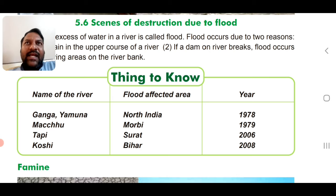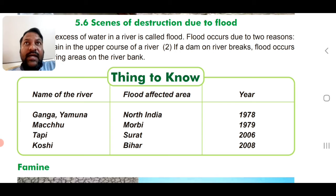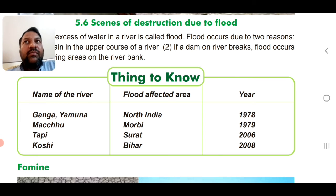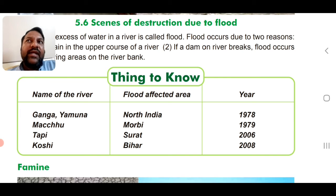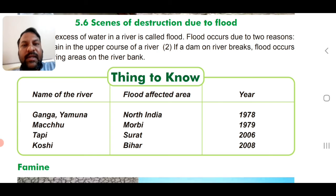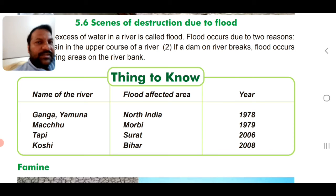Floods happen almost every year now. Chennai has experienced floods regularly. Mumbai recently saw 30 people die due to flooding. Scientists have studied this pattern to understand why it keeps happening.